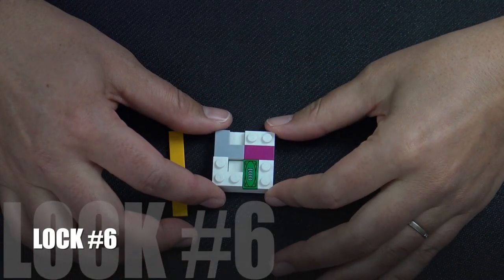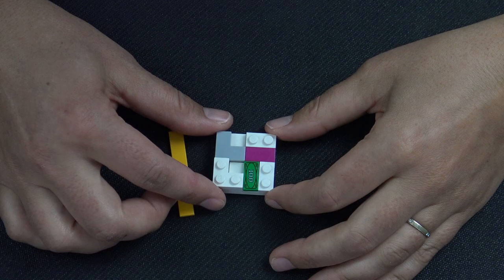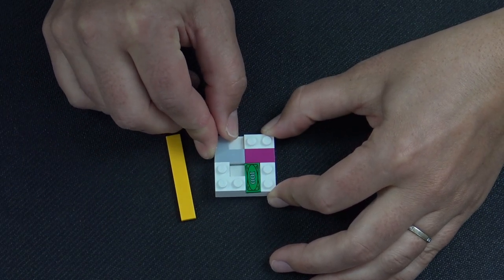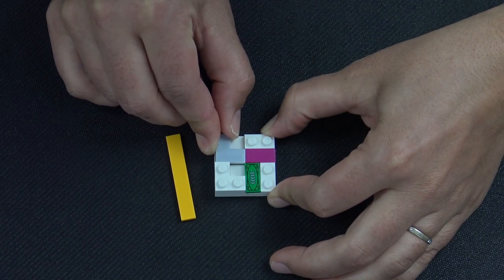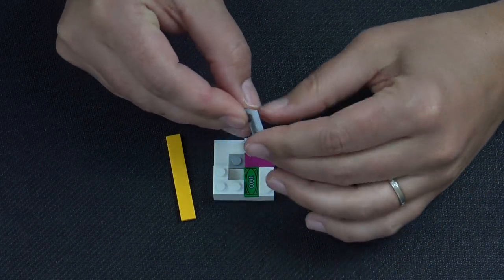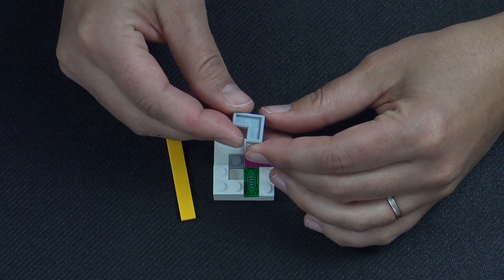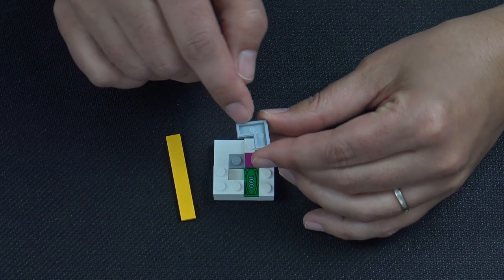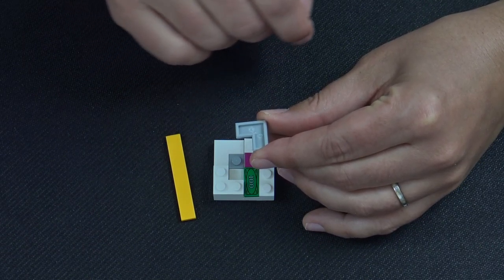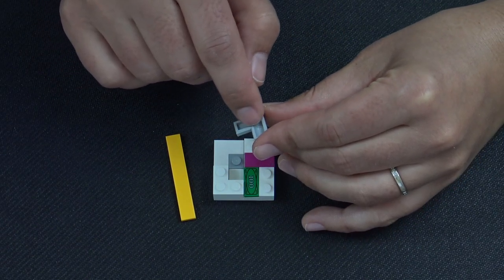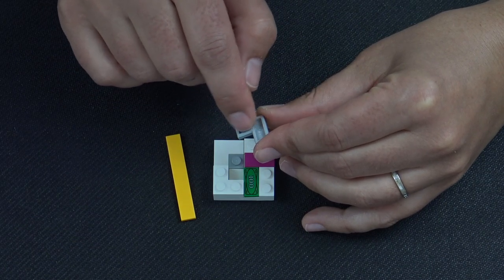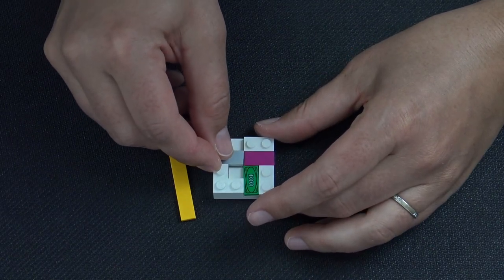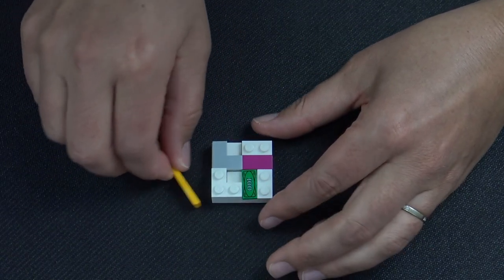All right, lock number six. This particular lock was used in C3 for the first time, and it allows movement in two different directions using the same piece, which seems counterintuitive for LEGO. But when you use these two by two corner tiles or plates and you remove both of the under tubes, and where the 90 degree angle is, there's a little side support there, if you remove that also, it allows for movement in two different directions.